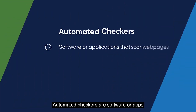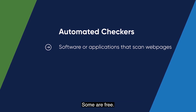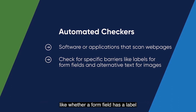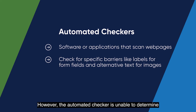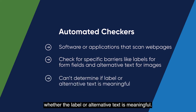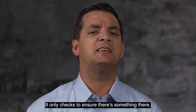Automated checkers are software or apps that you can access online or through a vendor. Some are free. They scan webpages and check for specific barriers, like whether a form field has a label or if alternative text is available for your images. However, the automated checker is unable to determine whether the label or alternative text is meaningful — it only checks to ensure there's something there.